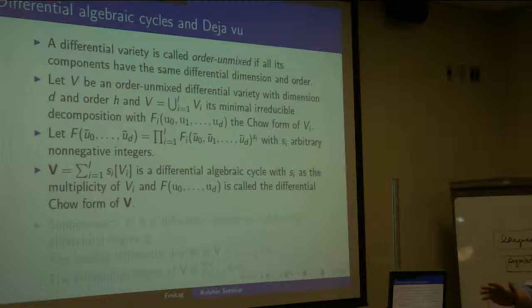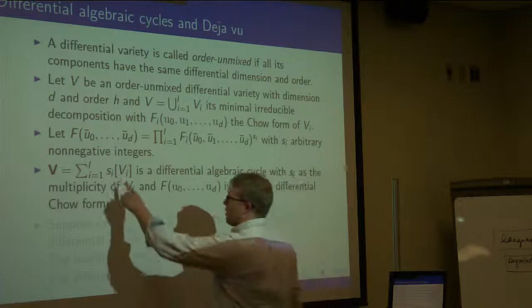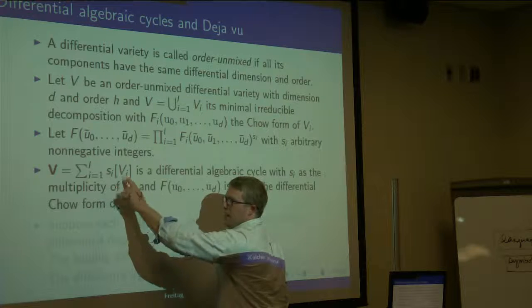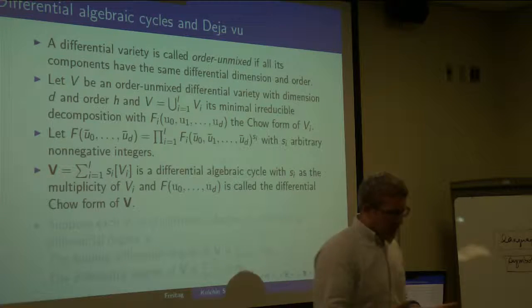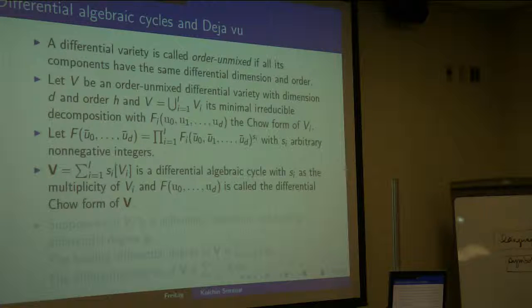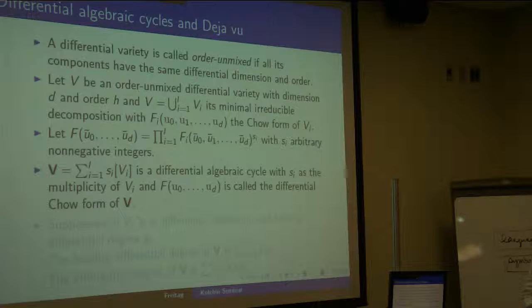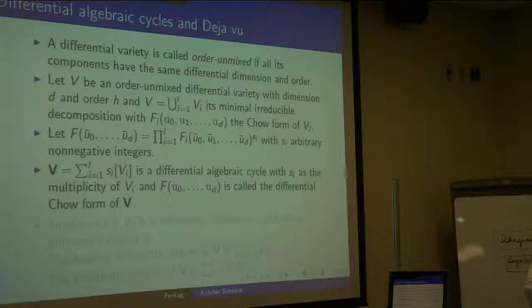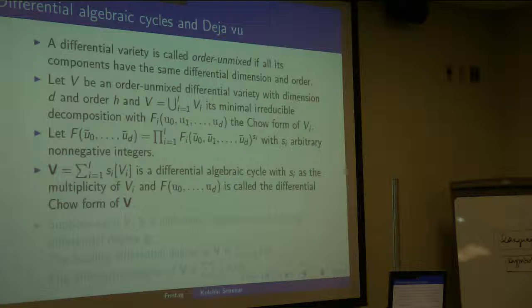A basic question: what do you mean by the multiplicity of a differential cycle? I just mean this number in front of the V_i. How do you compute it? Well, I give you the cycle as a formal sum where the s_i's are formal coefficients. If you're given equations or a characteristic set for the variety, you look at it from there.